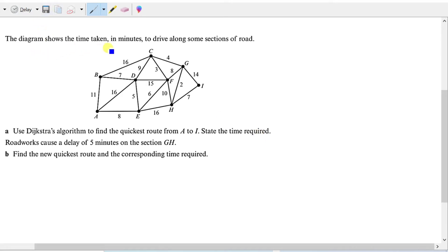Now it says here that the diagram shows the time taken in minutes to drive along some sections of the road. For this kind of problem we always assume we start at a certain point. Most of the time you start at point A, and we're going to have to read all this diagram according to Dijkstra's algorithm. For part A it says use the algorithm to find the quickest route from A, so we'll just circle this point, all the way to point I. State the time required.